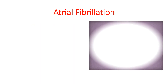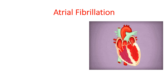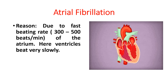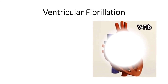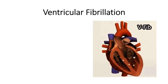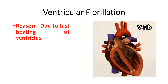Atrial fibrillation — the reason is due to a fast beating rate of 300 to 500 beats per minute of the atrium; here the ventricle beats very slowly. Ventricular fibrillation — the reason is due to fast beating of the ventricles, with no pumping of blood to different parts of the body during ventricular fibrillation.